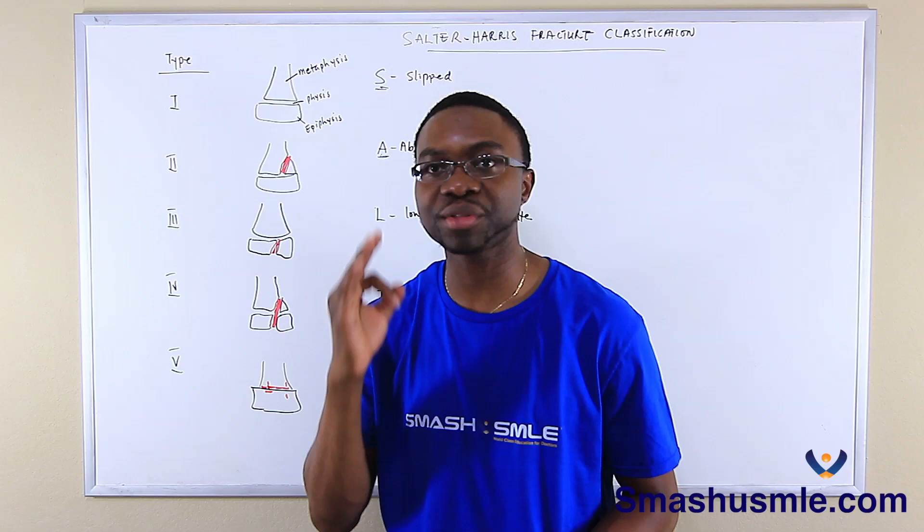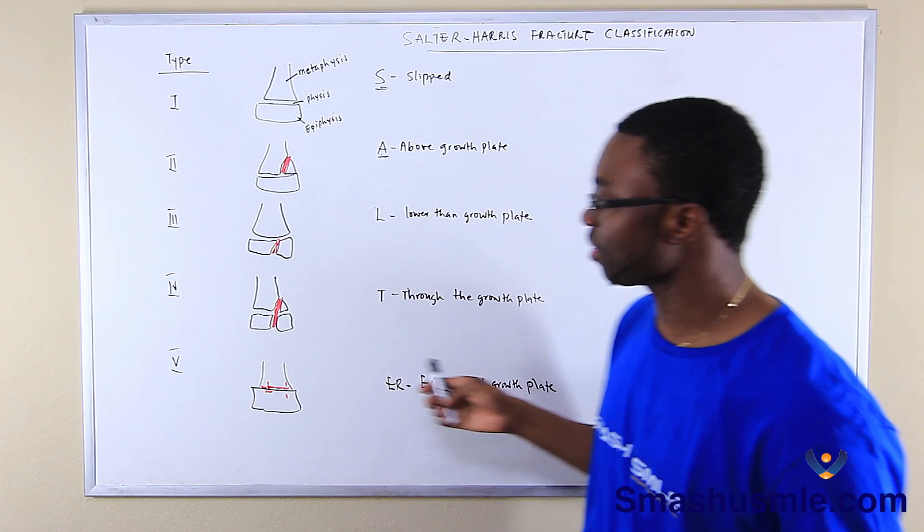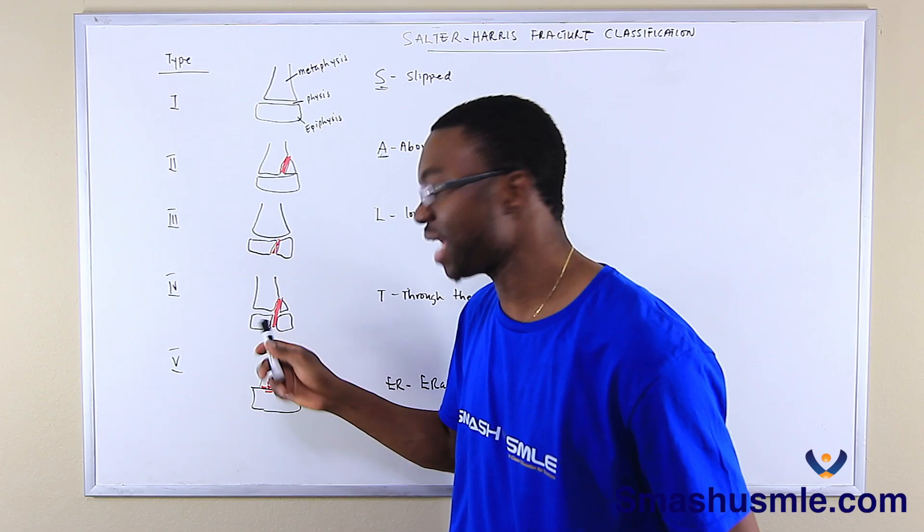Type four is Through the growth plate. What we have here is a fracture that cuts across through the metaphysis, physis, and the epiphysis. That is a type four fracture.